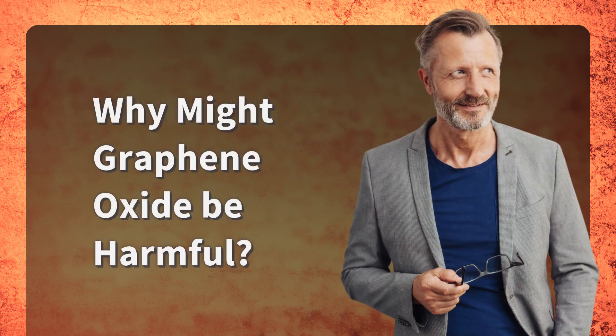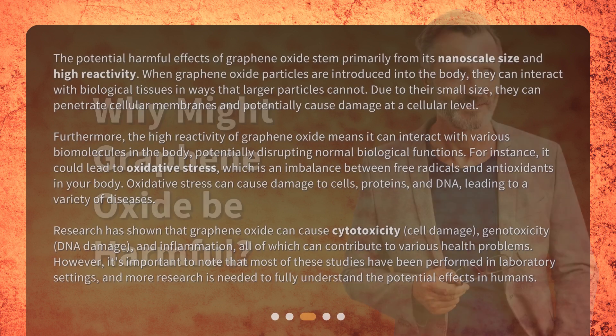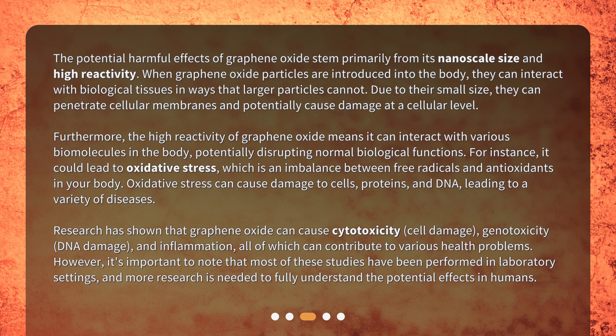Why might graphene oxide be harmful? The potential harmful effects of graphene oxide stem primarily from its nanoscale size and high reactivity. When graphene oxide particles are introduced into the body, they can interact with biological tissues in ways that larger particles cannot. Due to their small size, they can penetrate cellular membranes and potentially cause damage at a cellular level. Furthermore, the high reactivity of graphene oxide means it can interact with various biomolecules in the body, potentially disrupting normal biological functions.